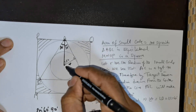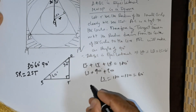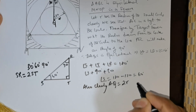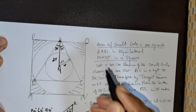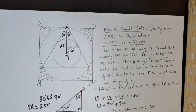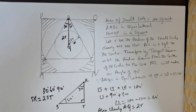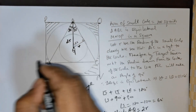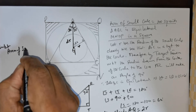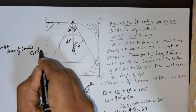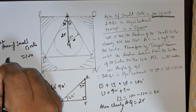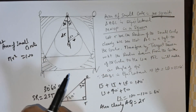So the length AQ is going to be equal to two times R — this entire length is 2R. Now, we know that the area of the small circle is given as 100 square units, so π r² equals 100.